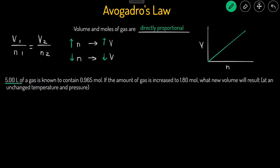So let's label the variables. This is our initial volume, V1. This is our initial moles, N1. And this is the final moles, N2. And then we want to find the final volume, V2.